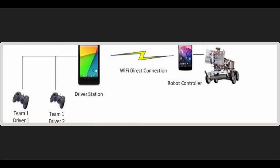The new platform has two gamepads that are connected to a phone that has the driver station app on it. Through a direct WiFi connection, this phone communicates with the other phone that has the robot controller app that is attached to the robot. This app tells the sensors and motors on the robot what to do. Using op modes we are going to create on App Inventor, we can change the robot's behavior.